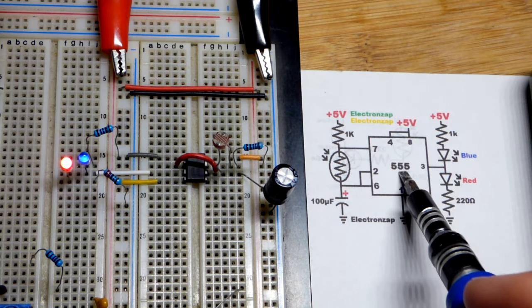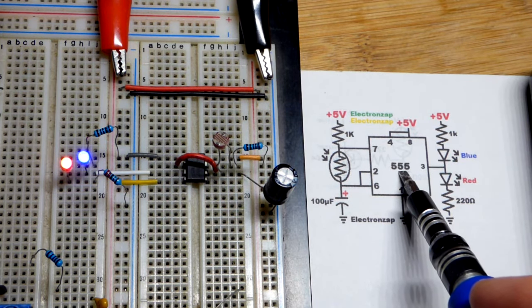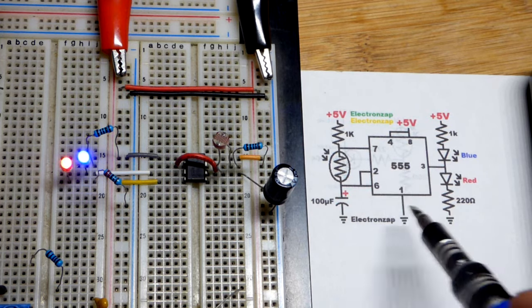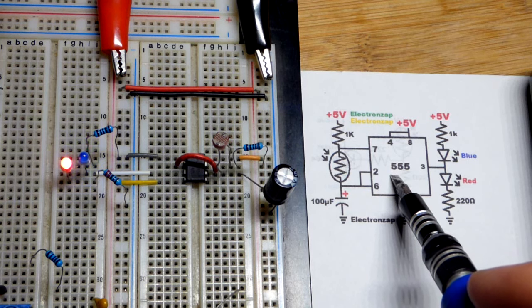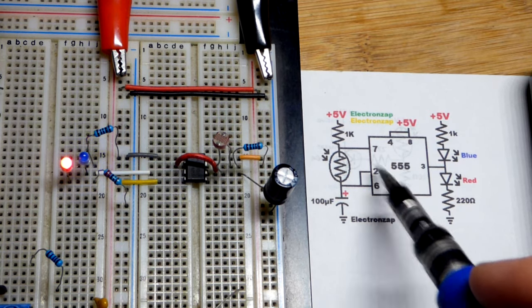So now in this video, I decided to take a 555 timer. This is actually an old diagram. It's on the same sheet as the recent videos I made with the light-dependent resistor. So in any case, we got the 555 timer.